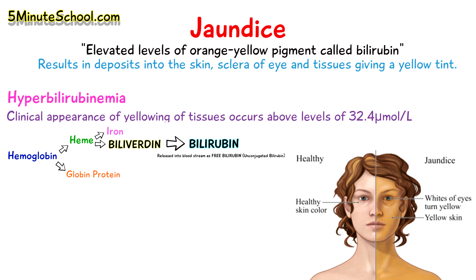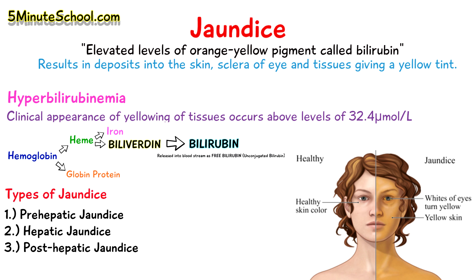Now we can talk about the three main types of jaundice. We have pre-hepatic jaundice, hepatic jaundice, and post-hepatic jaundice.